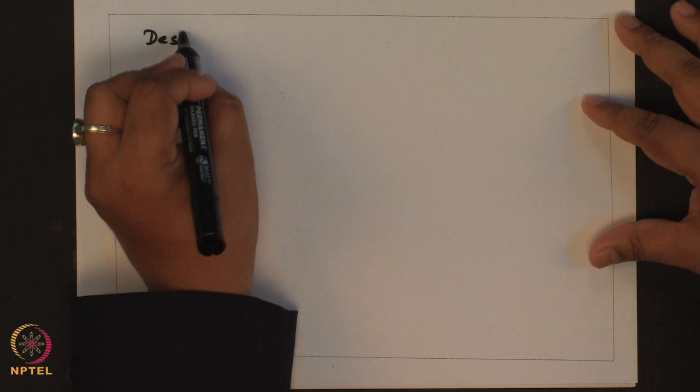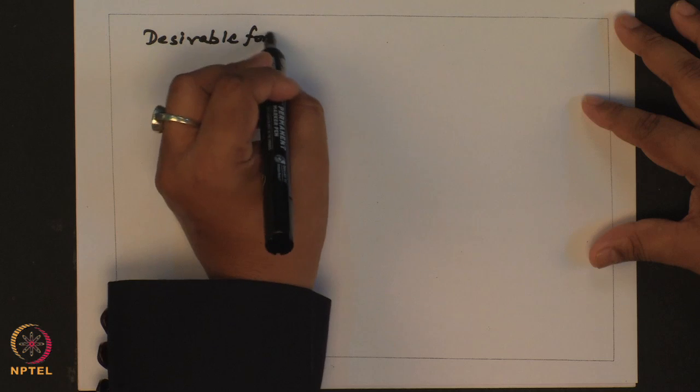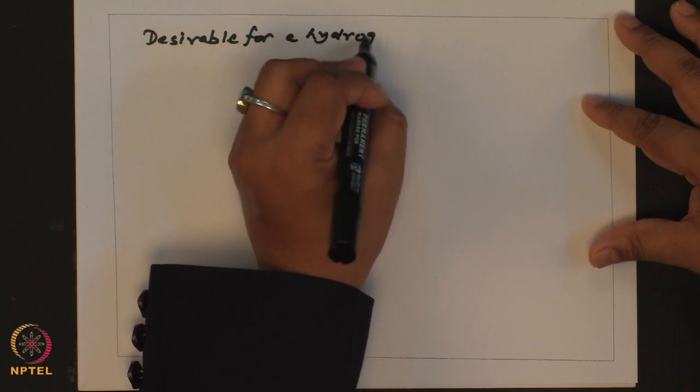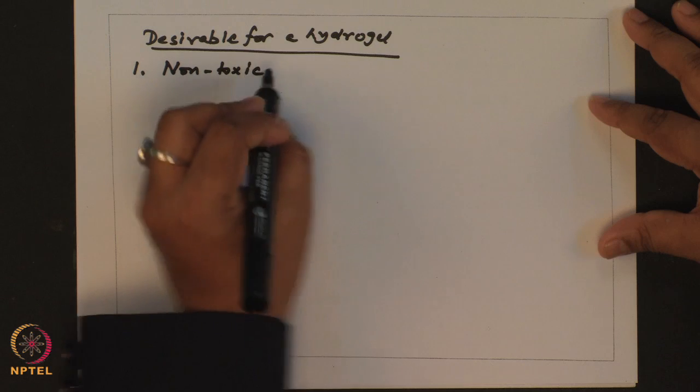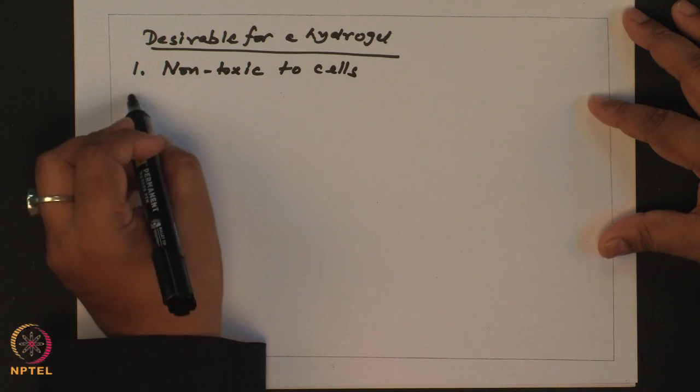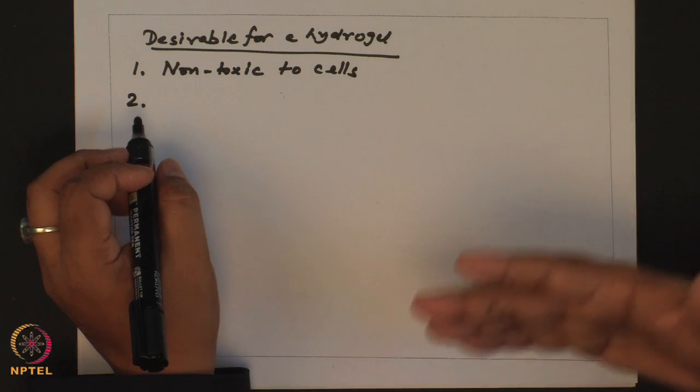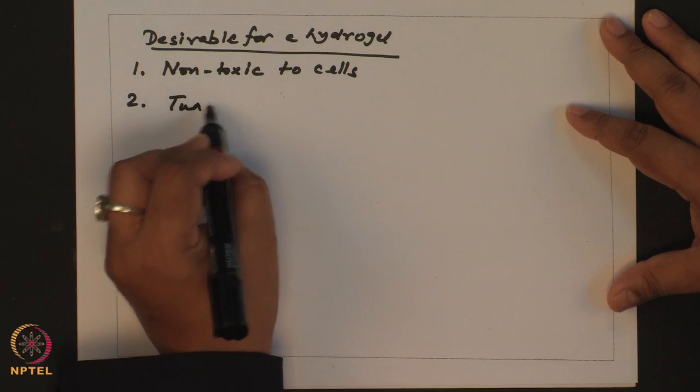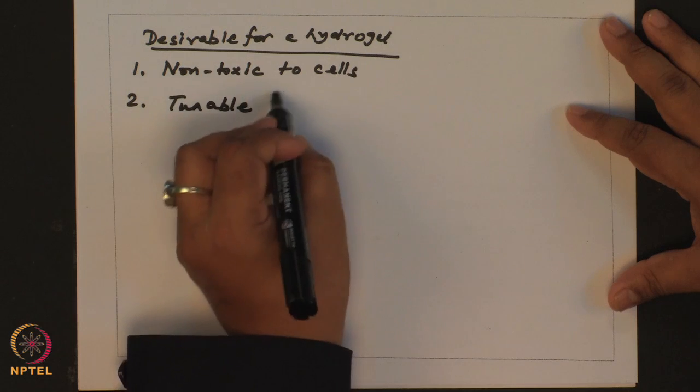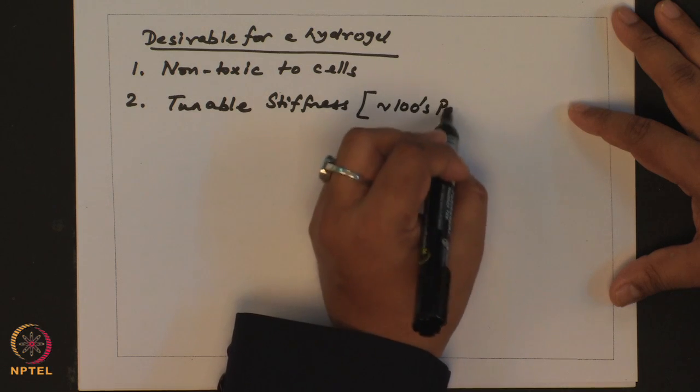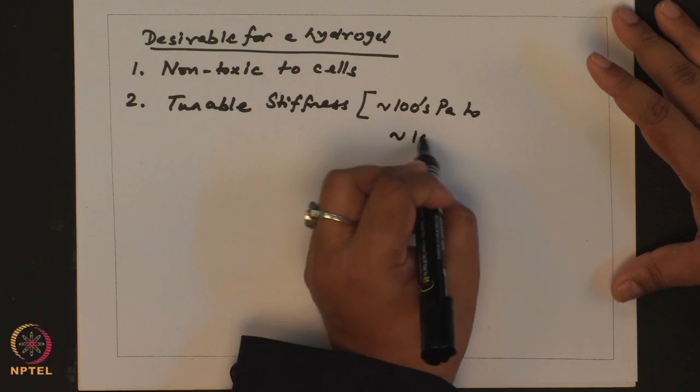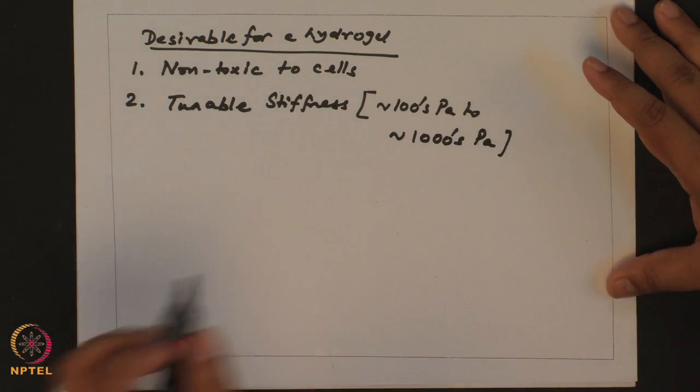For making a hydrogel relevant for mechanobiological applications, what should be some of the desirable properties? First and foremost the gel has to be non-toxic to cells. If you want to conduct studies where you are varying the stiffness over a large range, you need a polymer where you can tune the stiffness of the network. And relevant to in vivo would be hundreds of pascals to thousands of pascals. So you have a wide range.